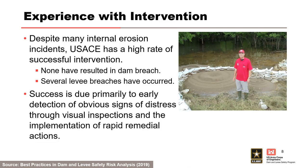Despite many internal erosion incidents, USACE has a high rate of successful intervention. None of these incidents have resulted in a dam breach, however several levee breaches have occurred. Success is primarily due to early detection of obvious signs of distress by visual inspections and rapid remedial actions. Rapid remedial actions have included drawdown of the reservoir, such as at Wister Dam and East Branch Dam, placement of sandbag rings around seepage exits, and placement of filter materials over seepage exits.